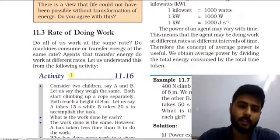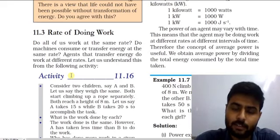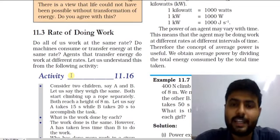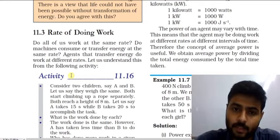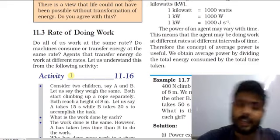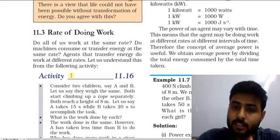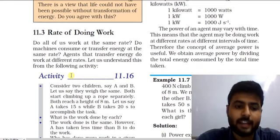Now we have an important topic: the rate of doing work. Do all of us work at the same rate? Rate is a word related to time taken. The capability of doing work varies for different people and different machines, so the rate is different. Agents that transfer energy to do work do so at different rates.